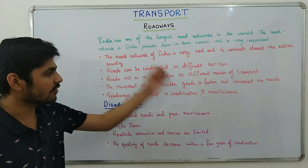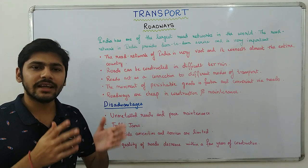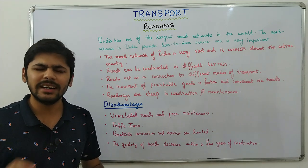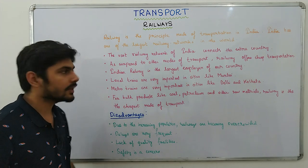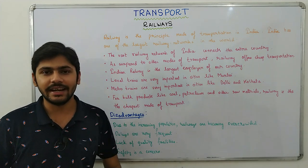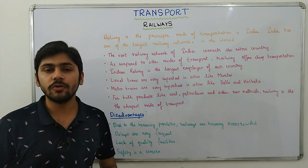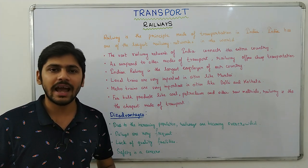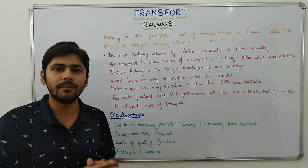That was all regarding roadways. You can also read about the golden quadrilateral, expressways, national highways, and state highways in your book — it is very interesting. Moving on to railways. Railway is the principal mode of transportation in India, and India has one of the largest railway networks in the world. Many of us use railways for daily commute via local trains or metro trains, and almost all of us use railways for long distance travel. Railways is also very important for the movement of bulk cargo like coal and petroleum, and these are the reasons why railways has played an important role in the economical development of our country.